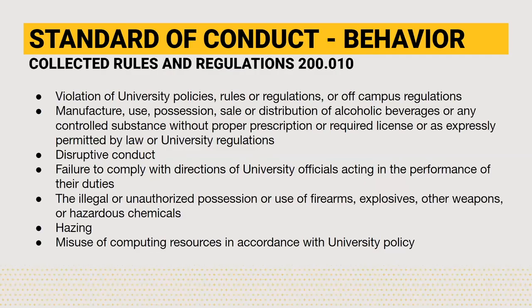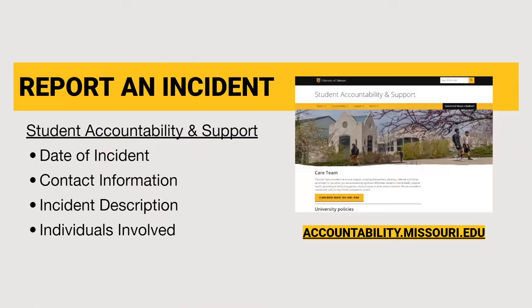To determine whether a student organization is responsible for conduct outlined in Section 200.010, all circumstances will be considered. If you are aware of such violations, you have a duty to report such behavior to the Office of Student Accountability and Support. The Office of Student Accountability and Support carries out the university's educational mission and goals by supporting you as you navigate challenging situations, and is responsible for facilitating the conduct procedures for the campus. Please gather the necessary information to report an incident: the date of the incident, contact information for those involved, a description of the incident, and the names of those involved. You may find additional information or report an incident by visiting accountability.missouri.edu.